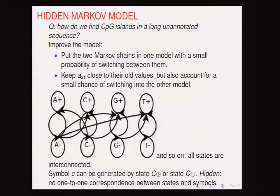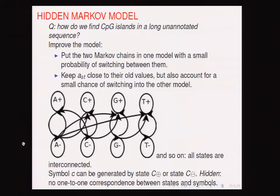Now, hidden Markov models. Let's consider a harder question: how do we find CpG islands in a long, unannotated sequence where we no longer know the system's state? We improve our model by combining the two Markov chains into one, with a small probability of switching between them. This is the old plus model (fully interconnected) and the old minus model (also fully interconnected). Unlike before, symbol C can be generated by either state C-plus or state C-minus — that is what 'hidden' means: there is no one-to-one correspondence between states and symbols.